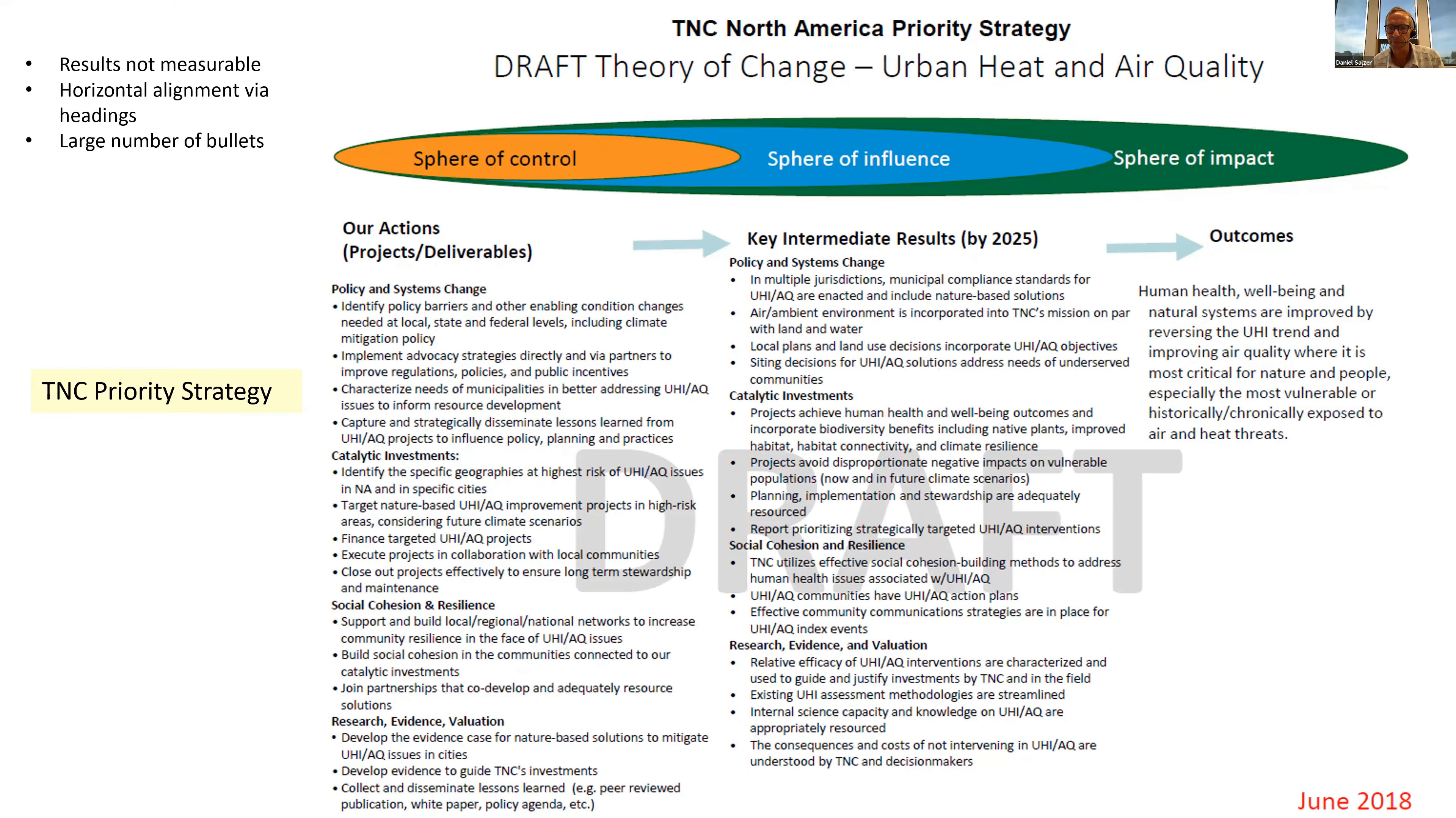This is another example where the left column lists deliverables as specific sub projects. This example includes results statements that aren't as measurable as the first example. I think these could be made smarter. You can make connections between deliverables and intermediate results because they've used bold headings.